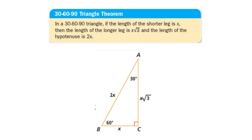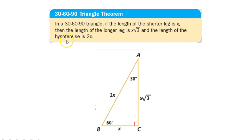Our last special right triangle is a 30-60-90 triangle. The 30-60-90 triangle theorem says that in a 30-60-90 triangle, if the length of the shorter leg is x, then the length of the longer leg is x times the square root of 3, and the length of the hypotenuse is 2 times x.